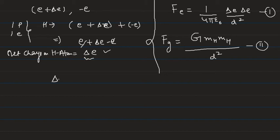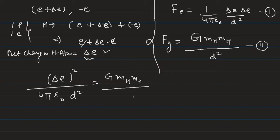So according to the question, we can equate equation one and two with each other. So we are going to get (Δe)² / (4πε₀d²) = G × mH × mH / d². So students, we will solve something like this.